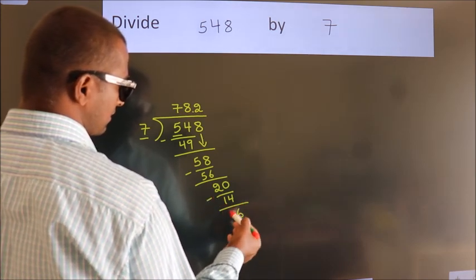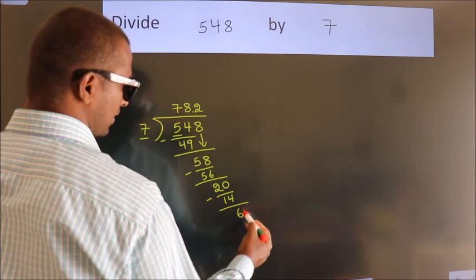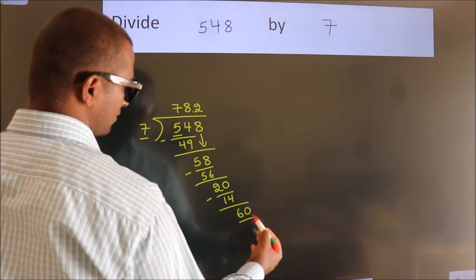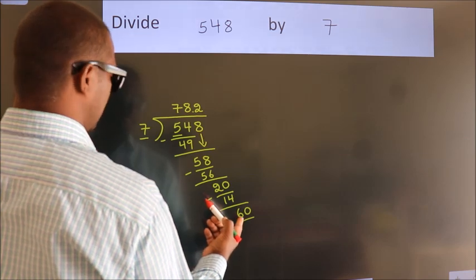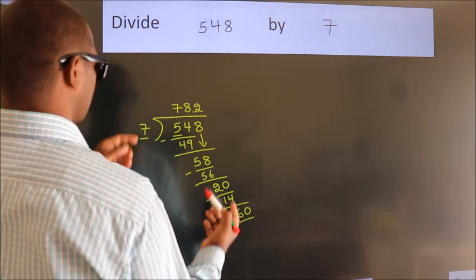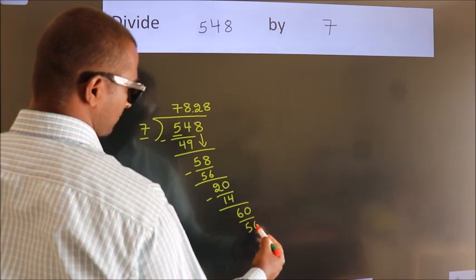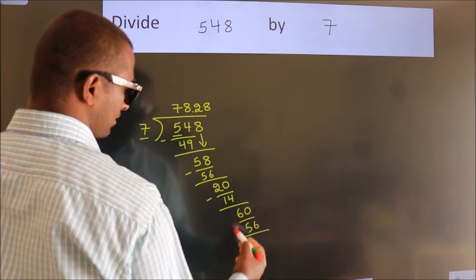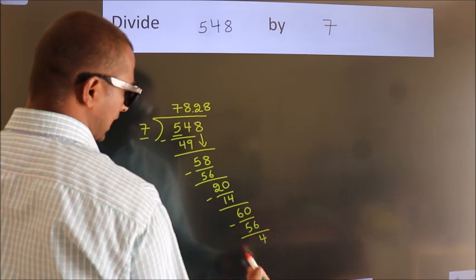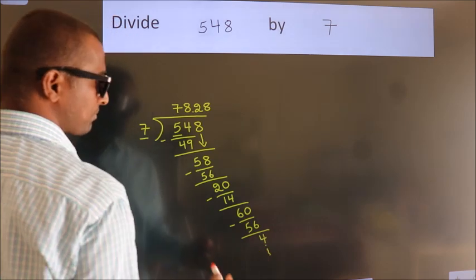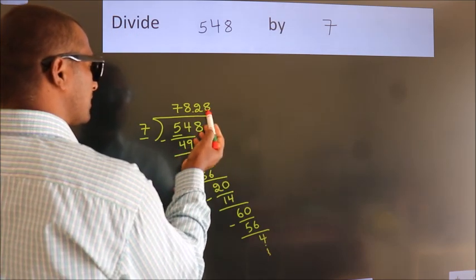After this, we already have the decimal, so directly take 0, making it 60. A number close to 60 in the 7 times table is 7×8=56. Now we subtract, and we get 4. The division continues, but it is enough if we do up to 2 decimal places.